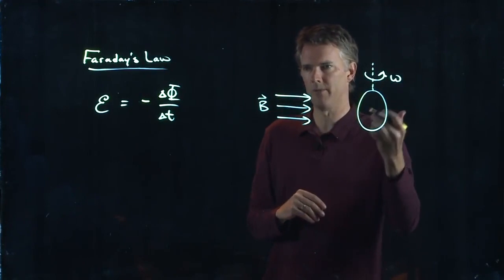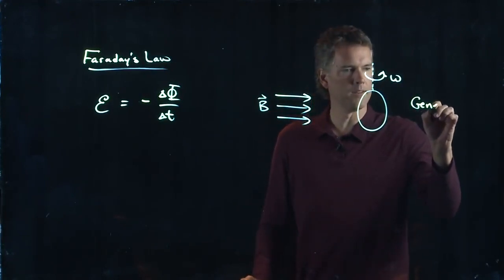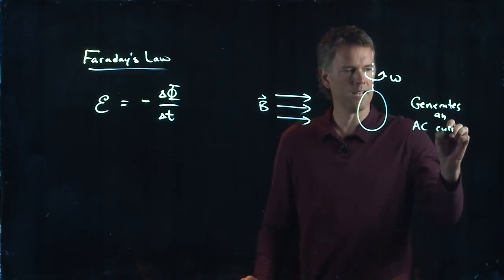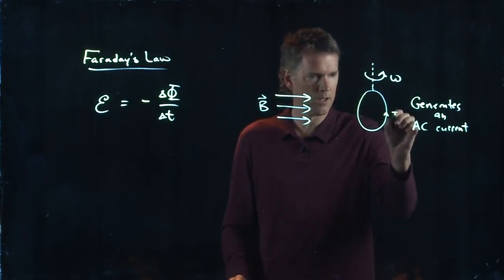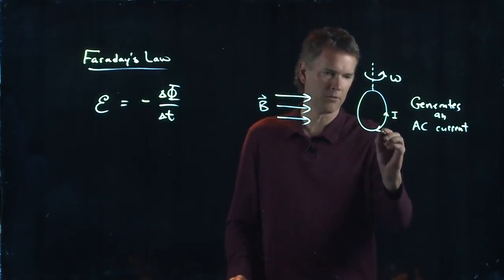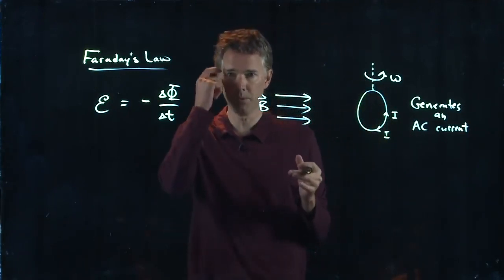And when it flips around and goes the other way, there is current generated the other way. So this will actually generate an AC current in this little loop. The current's gonna go one way, then later switch and go back the other way, and keep sloshing back and forth.